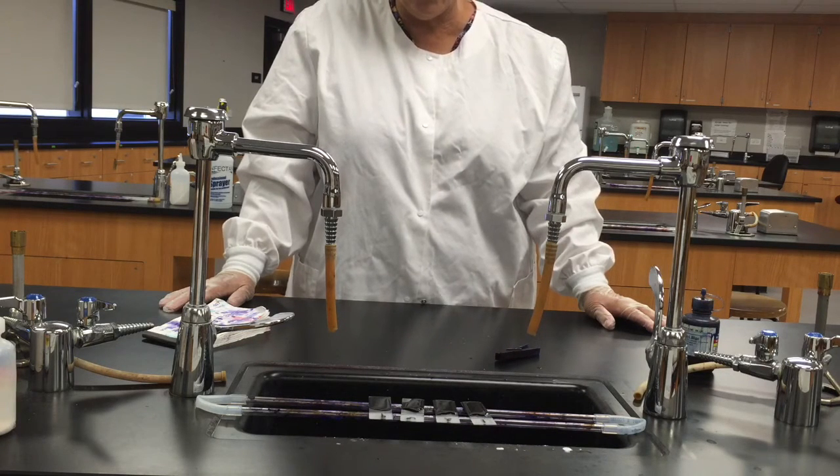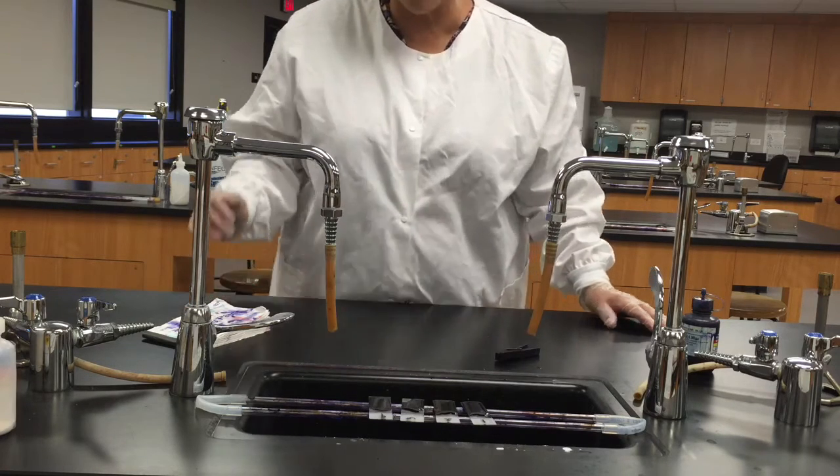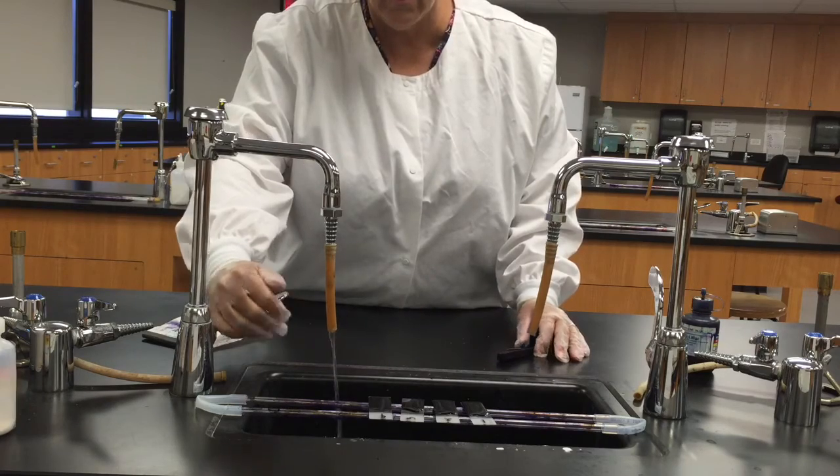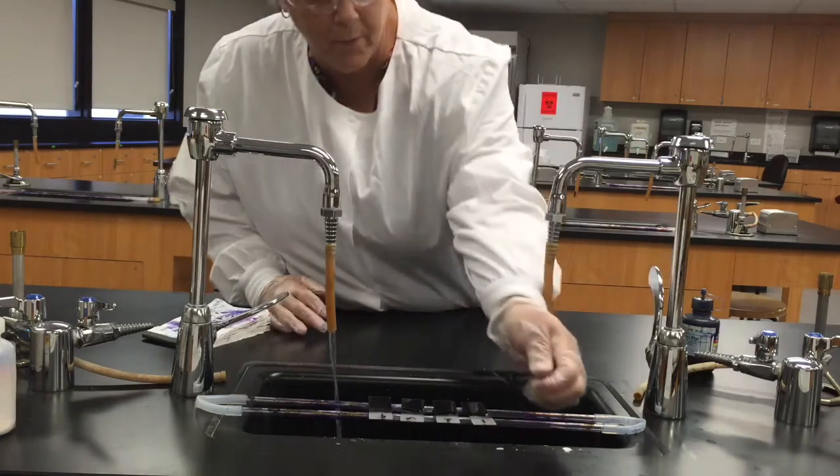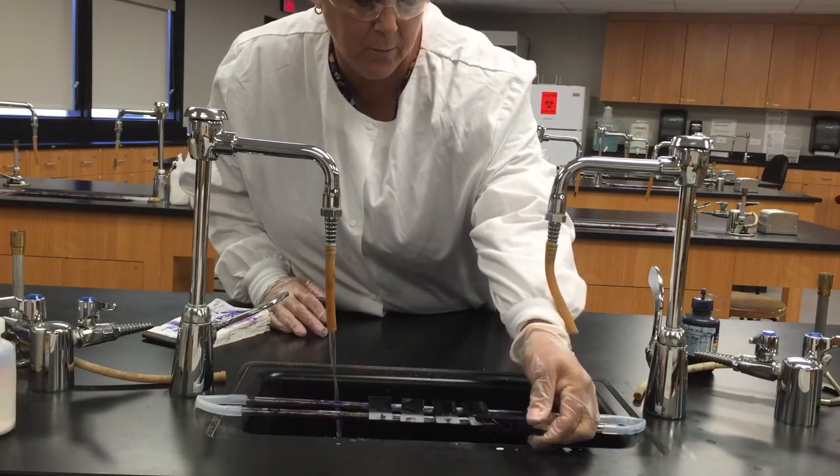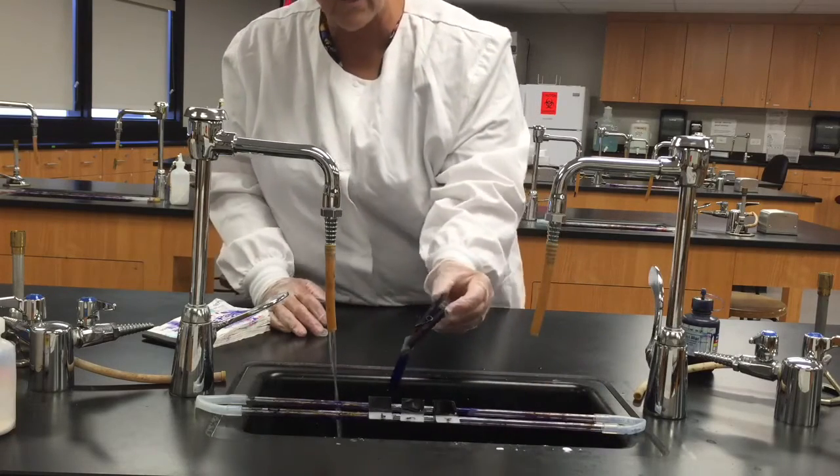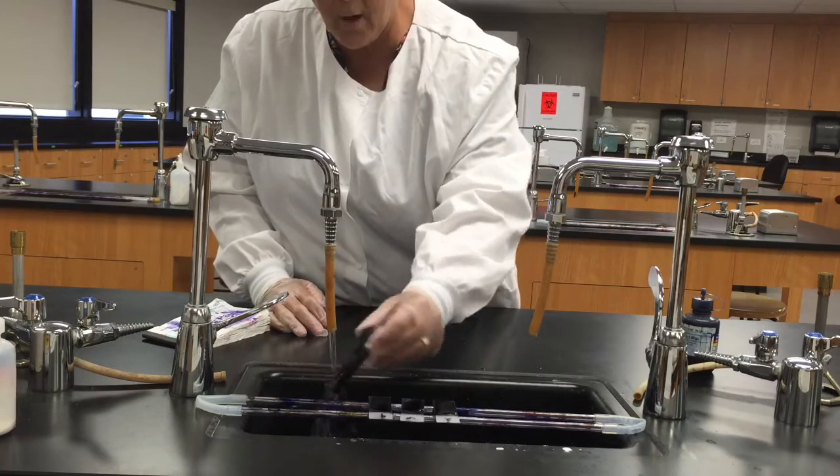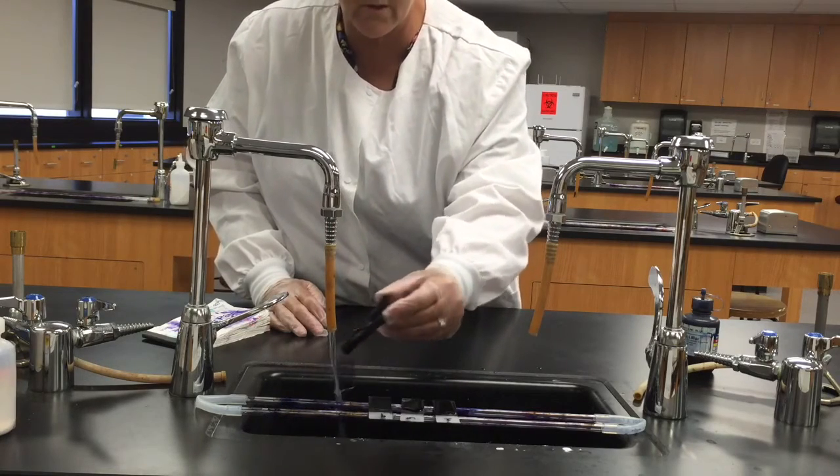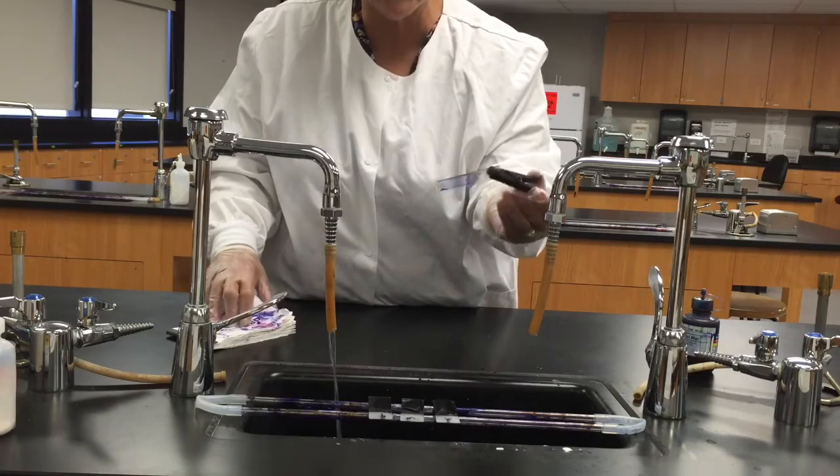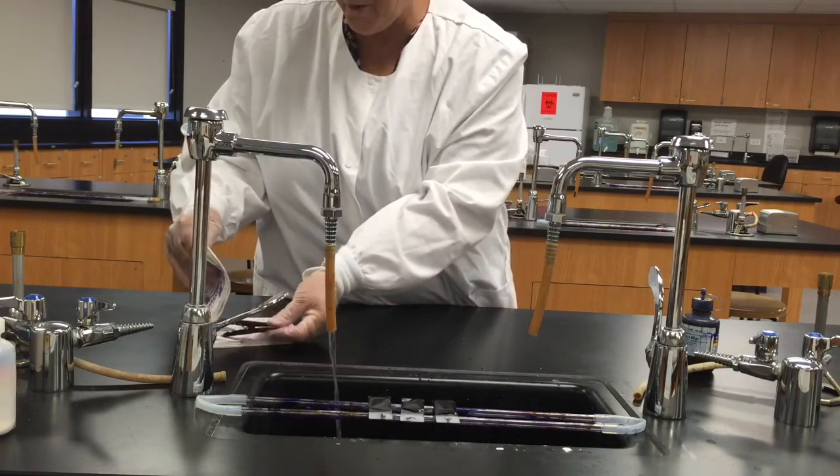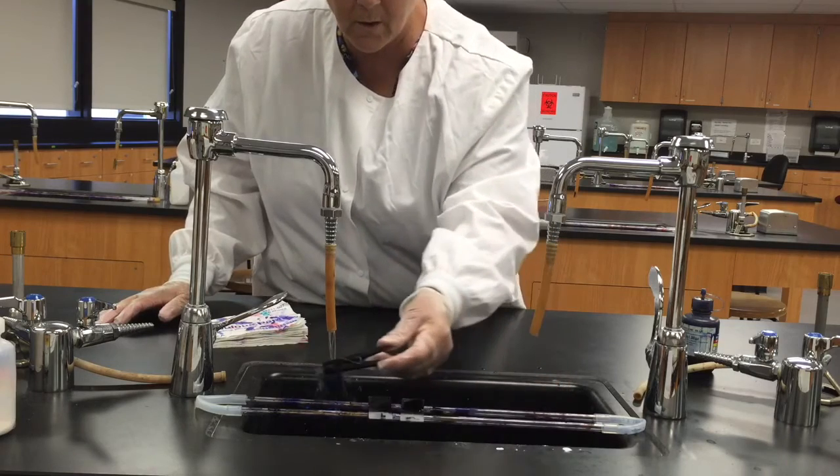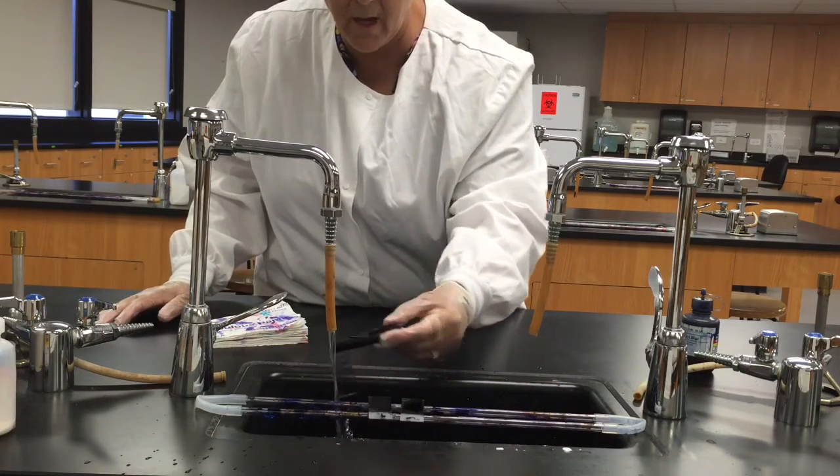All right, so the stain has been on the slides for a minute, what I'm going to do now is turn the water on kind of carefully, and I'm going to pick the slides up with my clothespin one at a time, let the stain drain off the slide, and give them a quick rinse. Now I'm most certainly not trying to rinse everything off of the slide, just the excess stain. And then I will place the slides in my bibulous paper, so I'm just going to go ahead and assembly line it here.